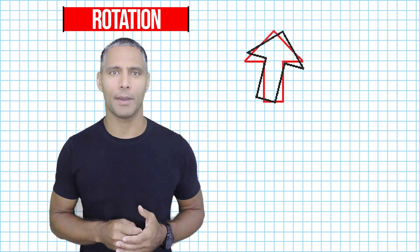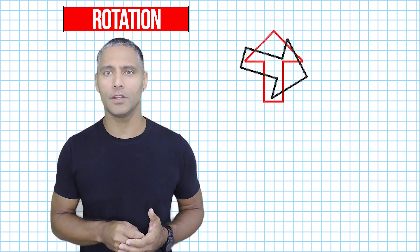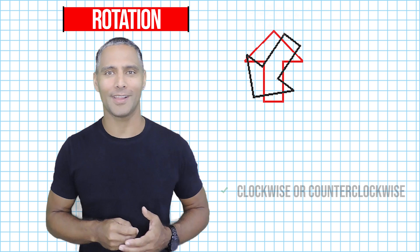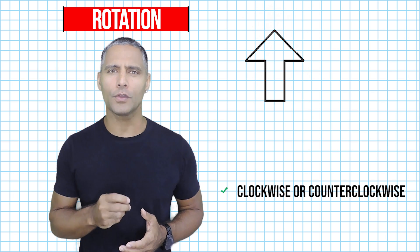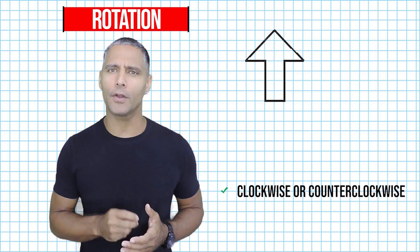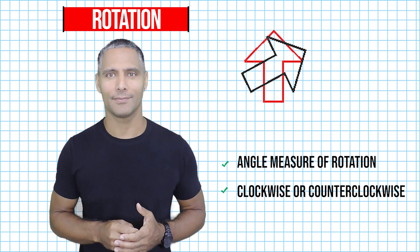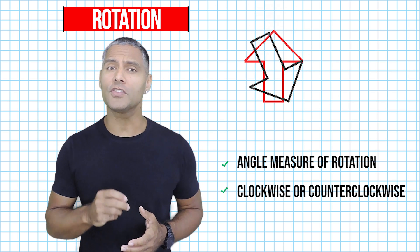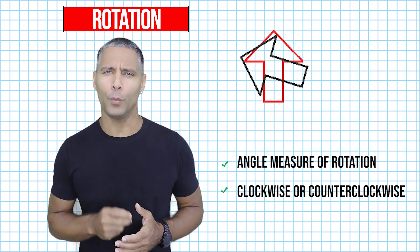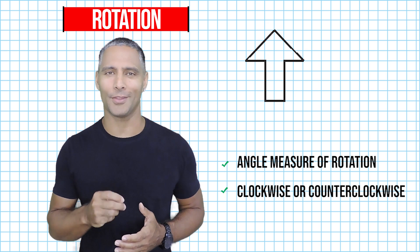Rotations may also be described by the direction that they are being rotated, whether it be clockwise or counterclockwise. We also use angle measure to describe how far an object is being rotated. Now remember, this is just an introduction to transformations. We will get into specific examples in other video lessons.